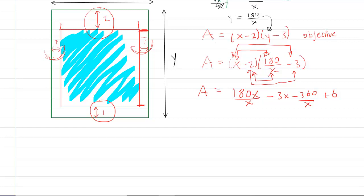We can simplify a little bit because the X here and the X here would cancel out. So now we just have 180 minus 3X minus 360 over X plus 6. Let's add the 180 and the 6 to make 186. So we can kind of trim it down and write it like this.